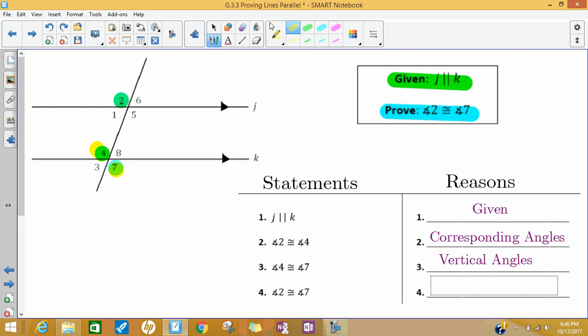We have something that actually kind of looks like the law of syllogism, where the end of that congruent statement is the same as the beginning of that congruent statement. I can sort of cancel those out and write that angle 2 then must be congruent to angle 7, which is what we're trying to prove. We call that the transitive property. So we've shown what we wanted to prove, and we can be done.